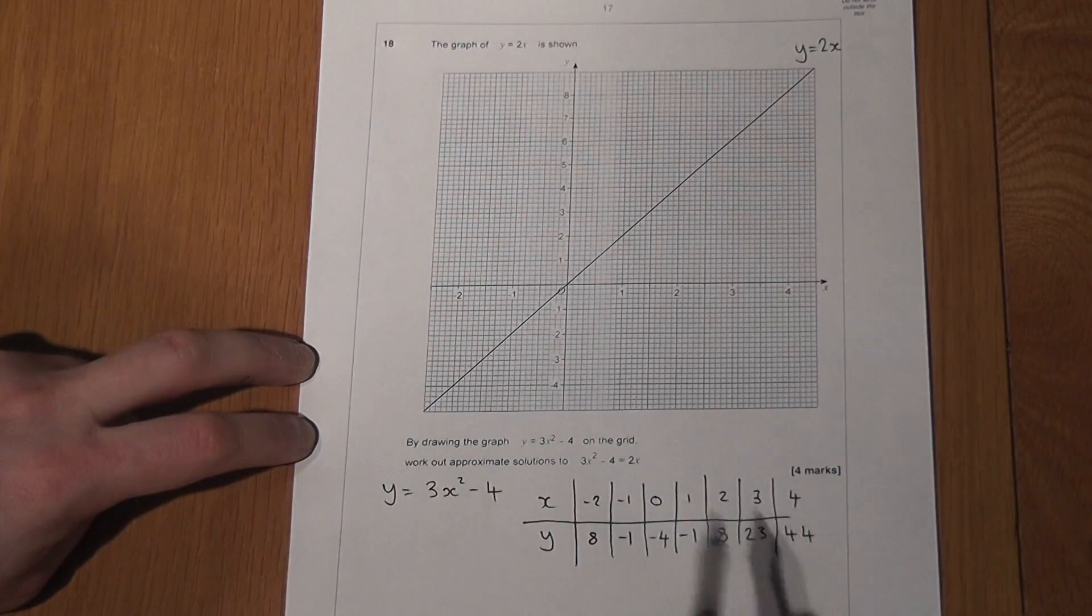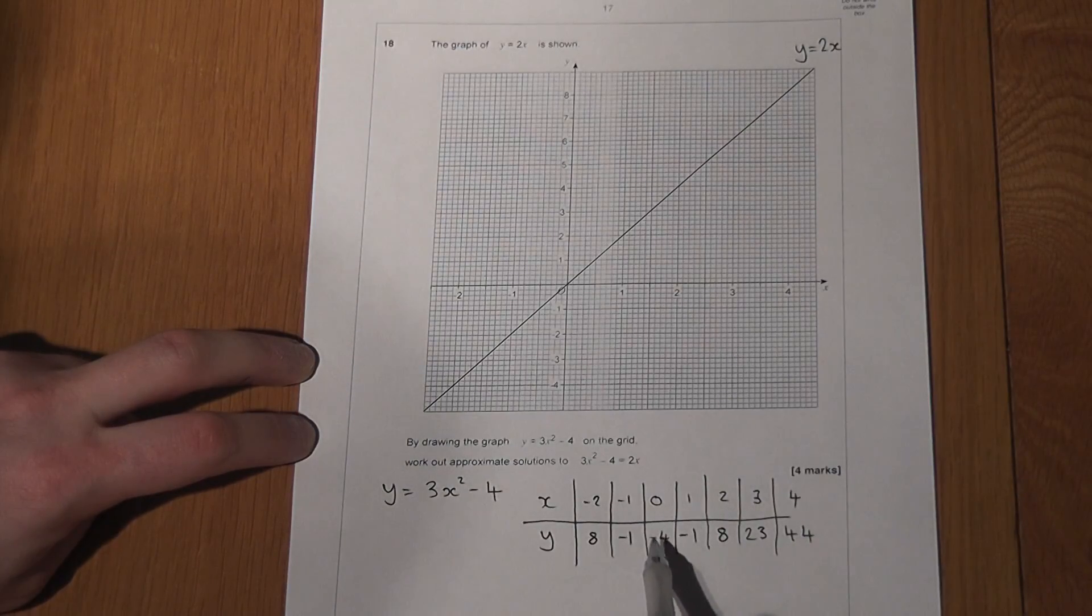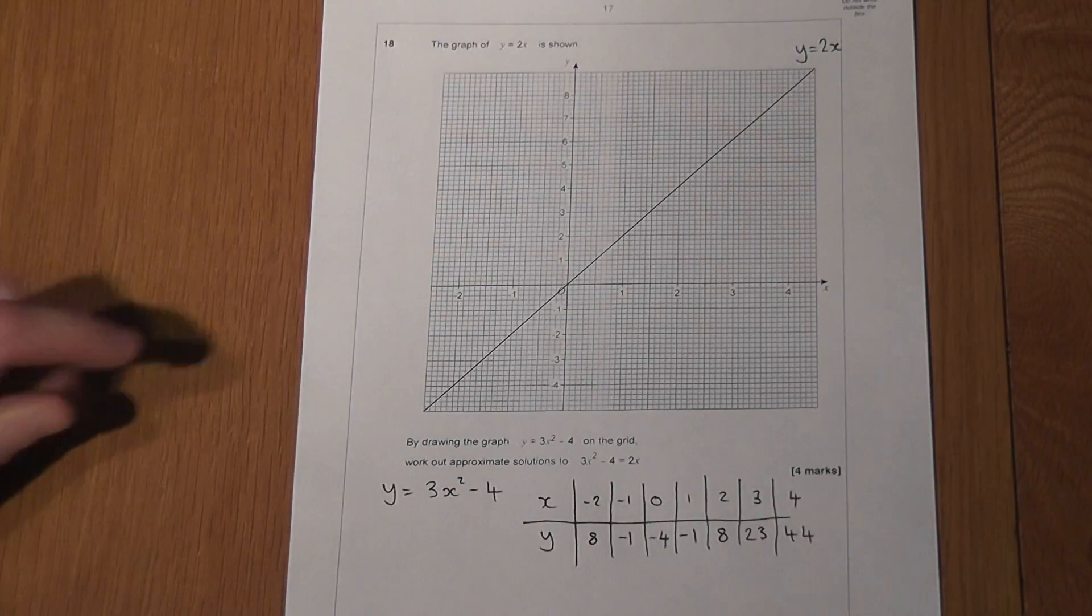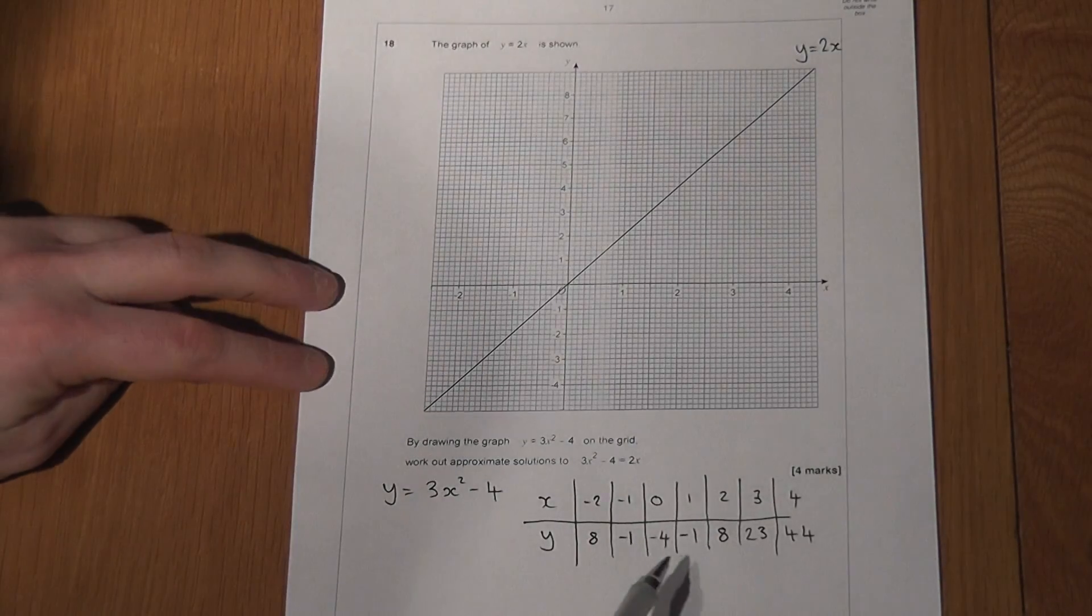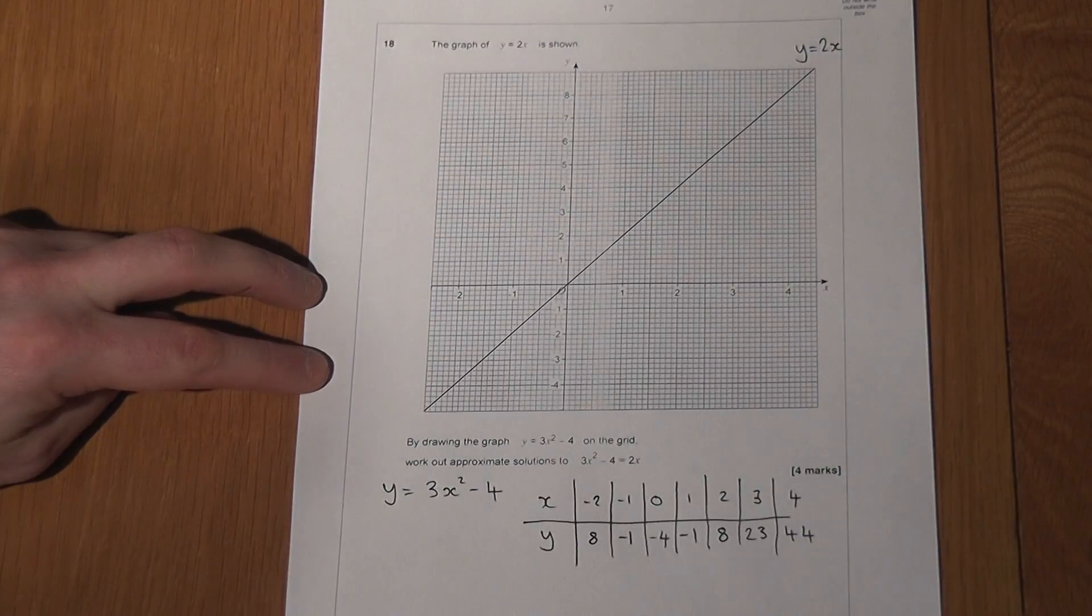And what you will observe is that this table has got some symmetry, the minus 4, the minus 1s and the 8s. Now the next step is to plot these coordinates on the grid above.